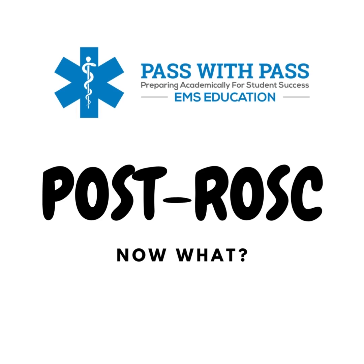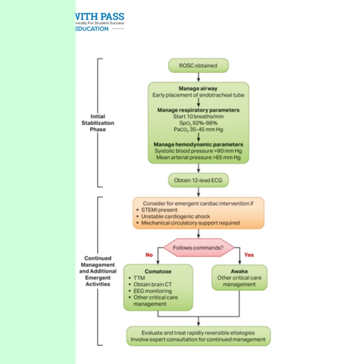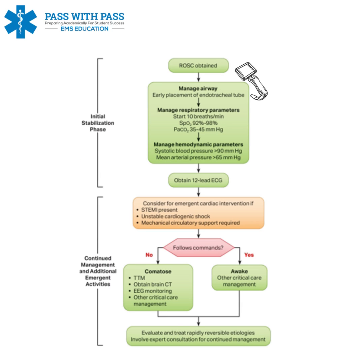This is the American Heart Association 2020 return of spontaneous circulation algorithm. At the very top, ROSC is obtained. After that, management of the airway — which may already be done. We either have an endotracheal tube in place, or we have a supraglottic airway: either a KING, an iGel, or an LMA in place, depending on where you work.